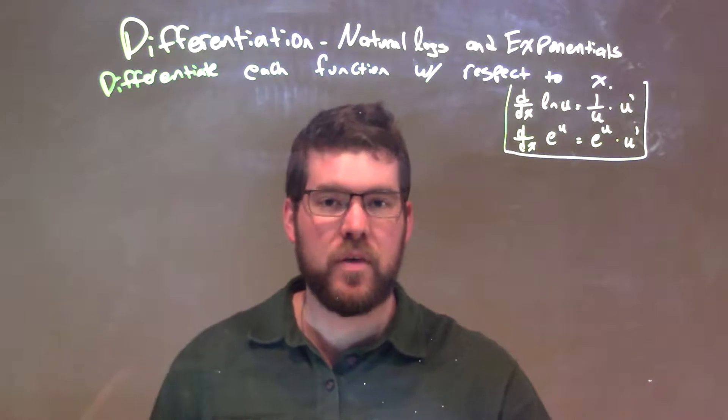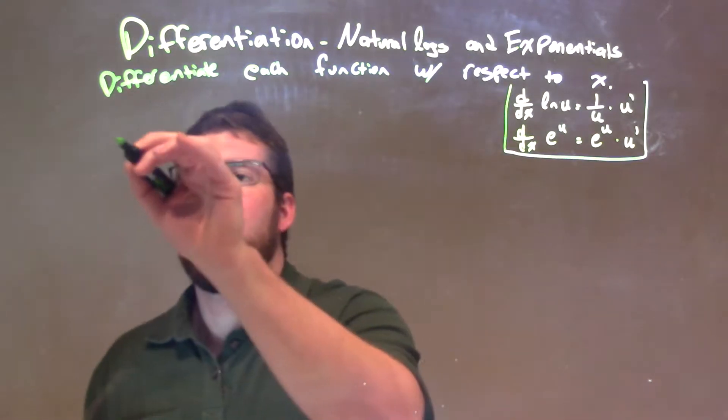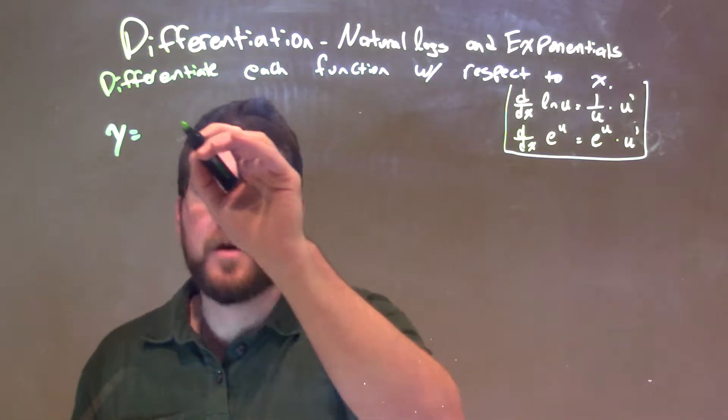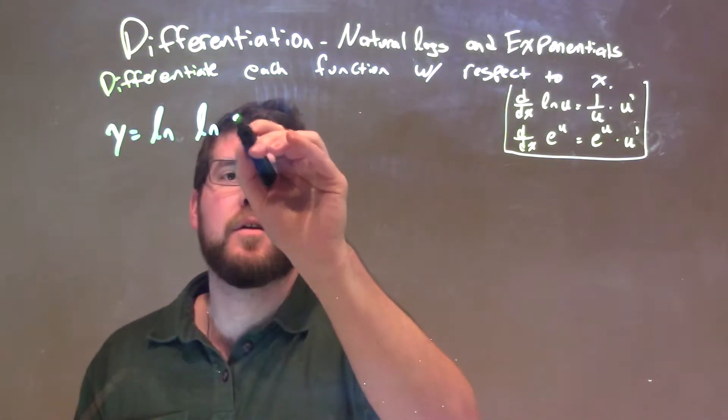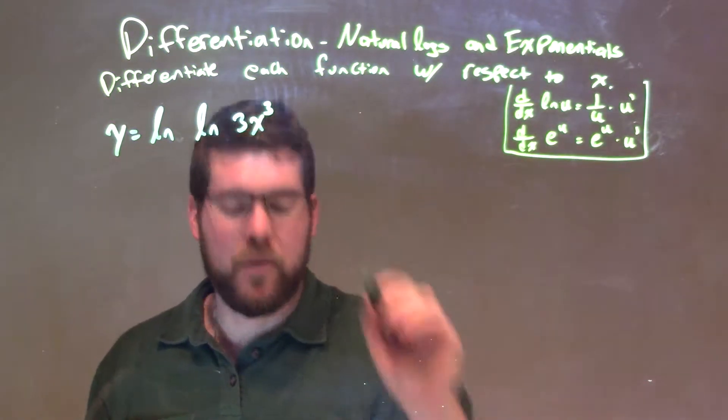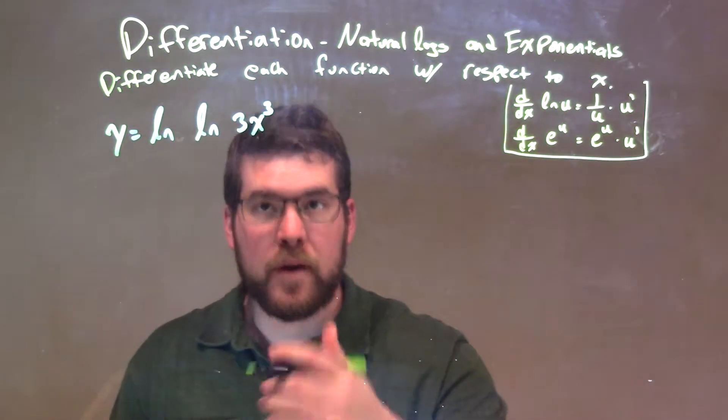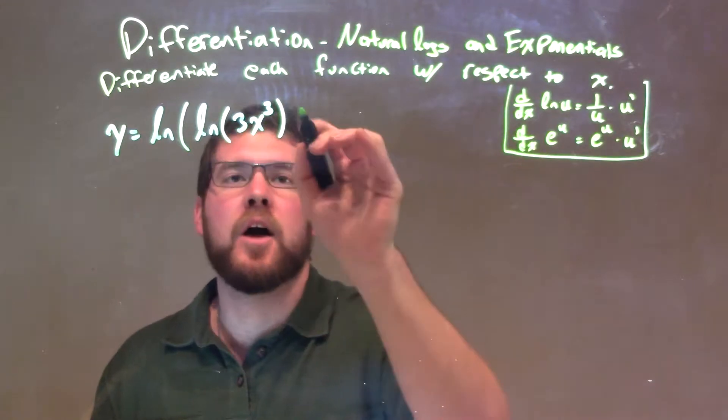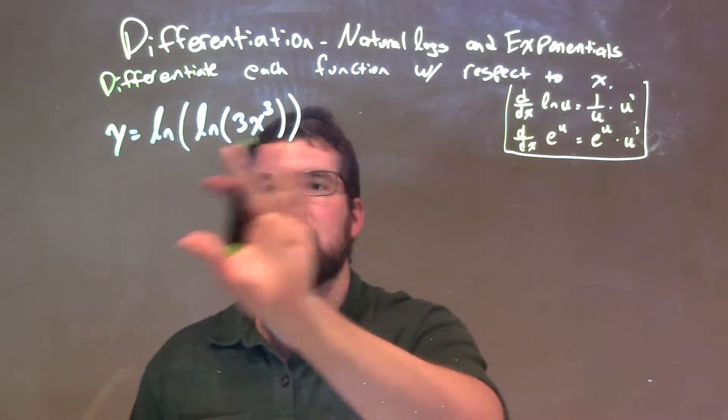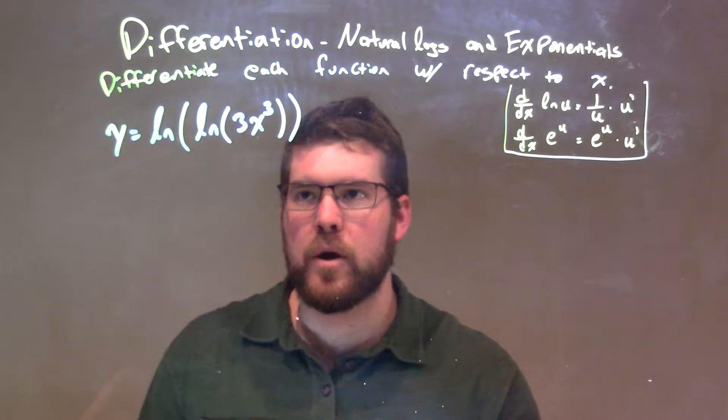If I was given this function, y equals the natural log of the natural log of 3x to the third power. Now, you might see it on this, but we really aren't doing the natural log of 3x to the power and the natural log of the natural log of 3x to the third power. If you want to prep these in, it really helps see what's going on.